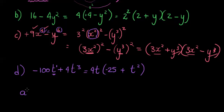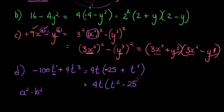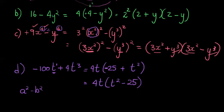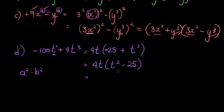Now is t squared minus 25 the difference of two squares? It doesn't immediately look like the a squared minus b squared format, but we recognize the two terms have different signs. Using the commutative property of addition, I can turn them around: t squared minus 25. So 4 can be written as 2 squared, and now this last bracket can again be factorized into two brackets.